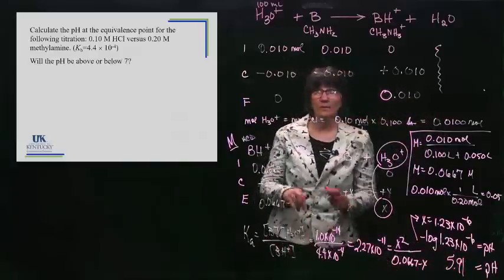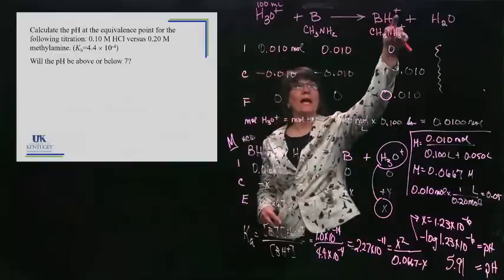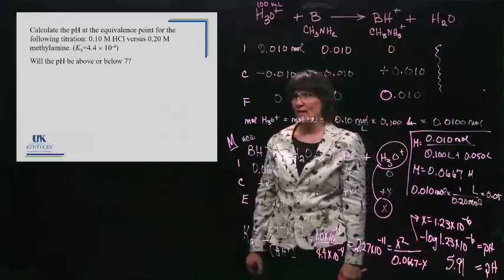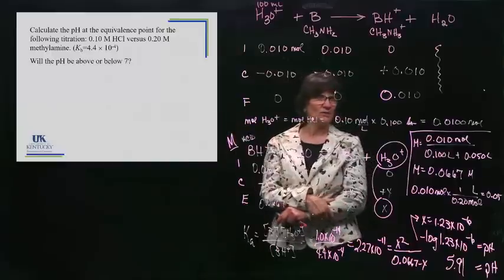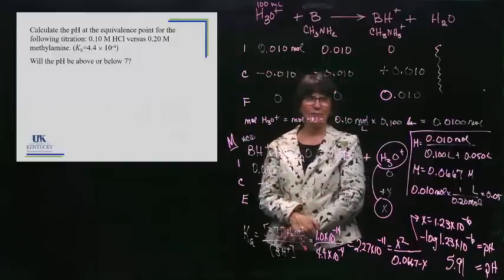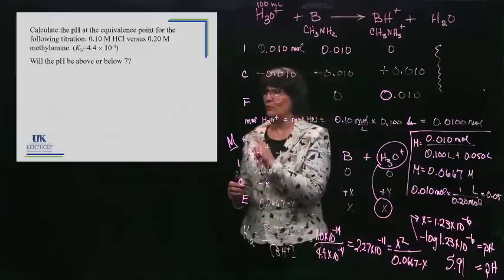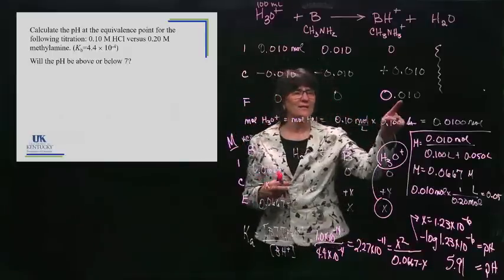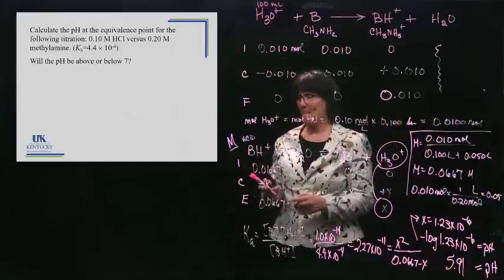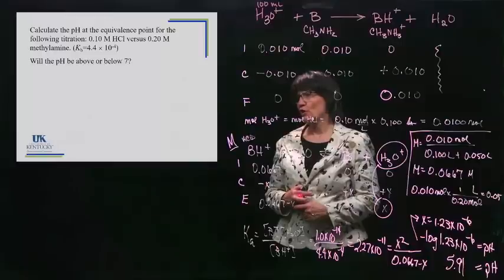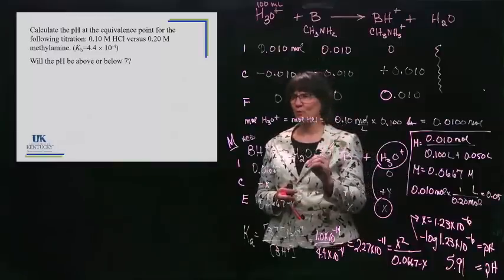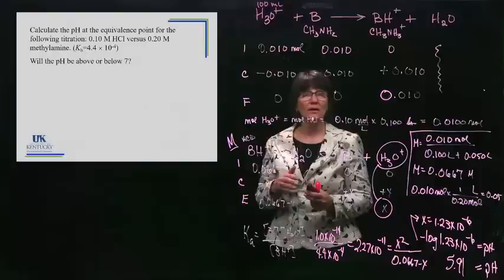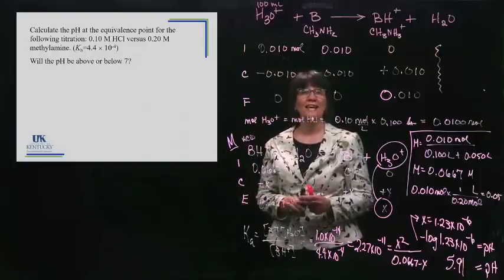Should it be an acidic pH? Yes — at the equivalence point you created an acid, so it should be below 7. And 5.91 is below 7, so that's our check. If you don't remember at the beginning, remember: if the acid is strong, it wins and it should be an acidic solution. The real reason is because you're producing an acid at the equivalence point. We've worked through several titration problems and will stop here — supplemental additional example problems are available.